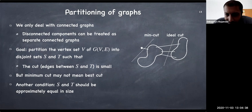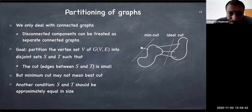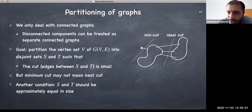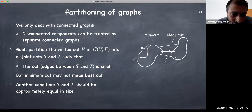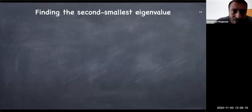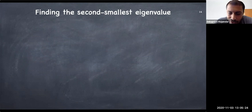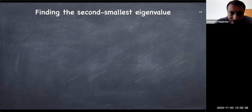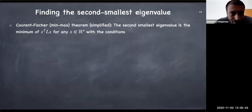We want to avoid too many cross-partition edges while also keeping the partitions comparable in size — not one very small and one very large. The approach is to find the second smallest eigenvalue of the Laplacian. We've shown that it is positive if and only if the graph is connected, and the process of finding it will also give us a partition of the graph. Before that, we refer to an important theorem.